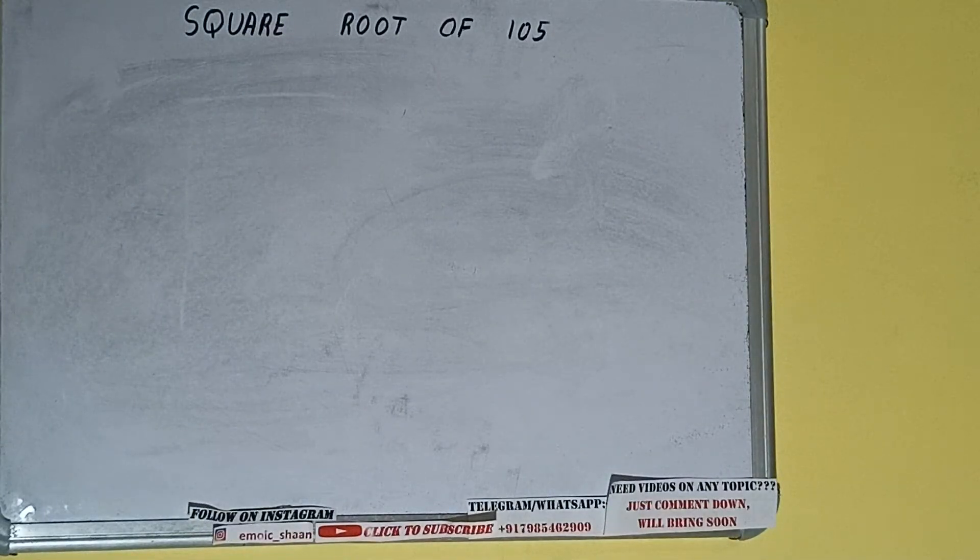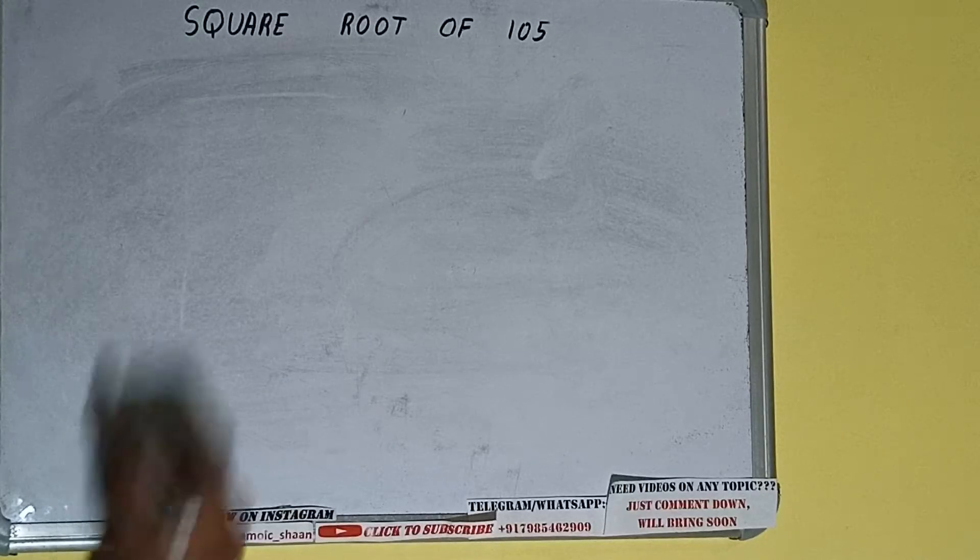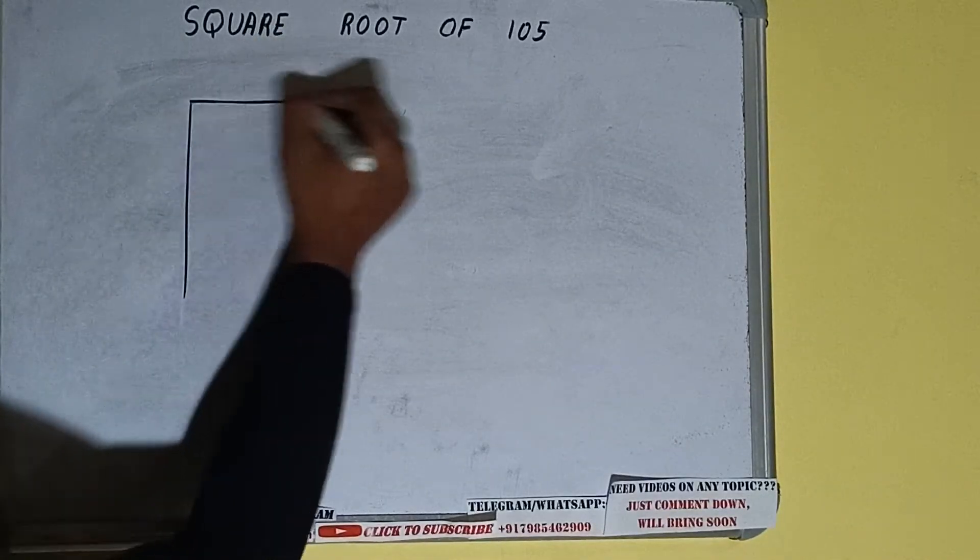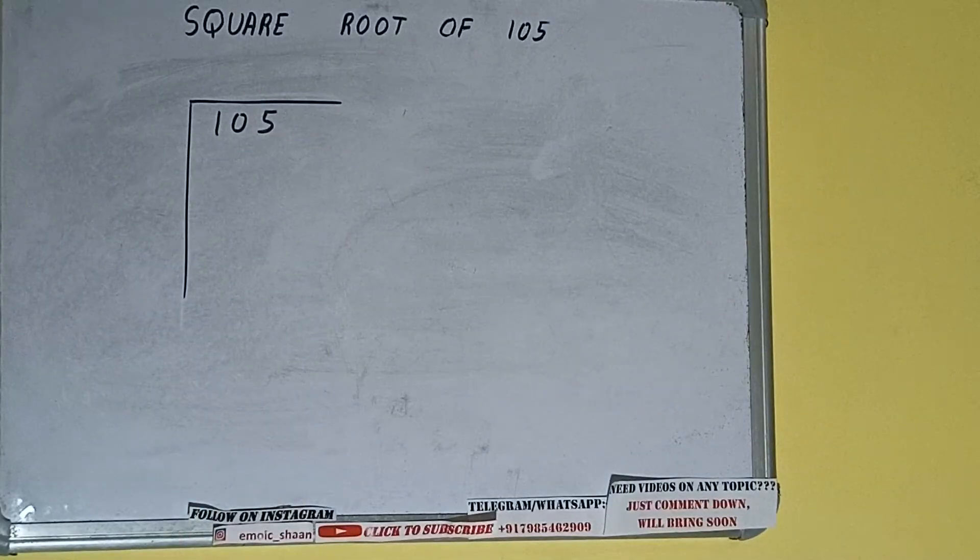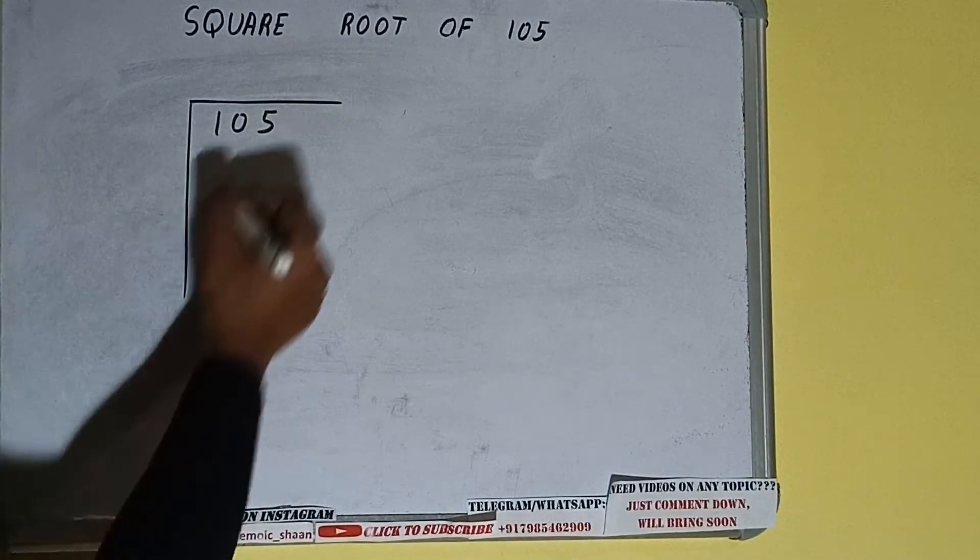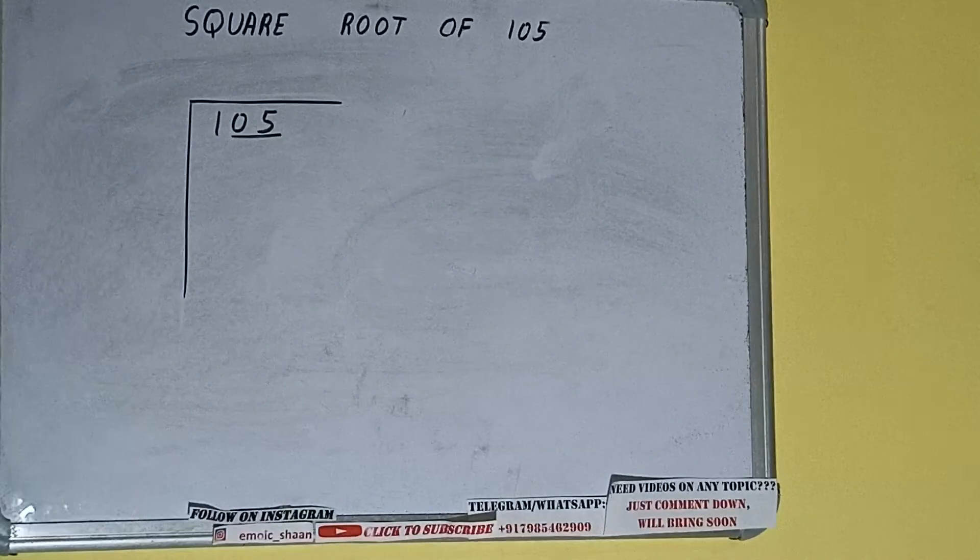Hello friends, and in this video I'll be helping you with the square root of the number 105. So let's start. First of all we need to write the number like this. The next thing we need to do is form pairs from the right hand side, so one pair will be this and this one will be left out.